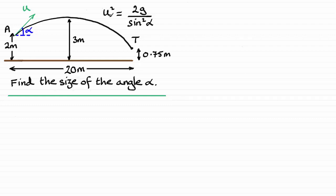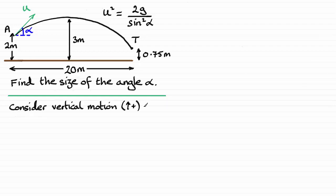To progress, I'm going to look at the vertical motion and the horizontal motion. Through these three equations — this one here and the equations derived for vertical and horizontal motion — I have simultaneous equations that I should be able to solve for angle alpha. I've taken upwards as positive, since we project in an upward direction.